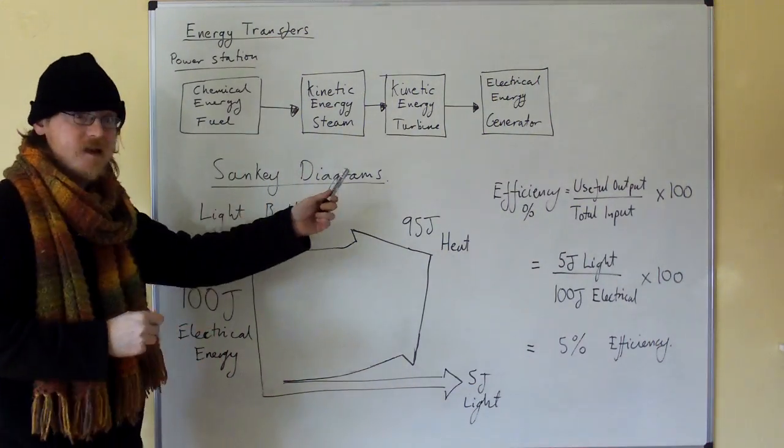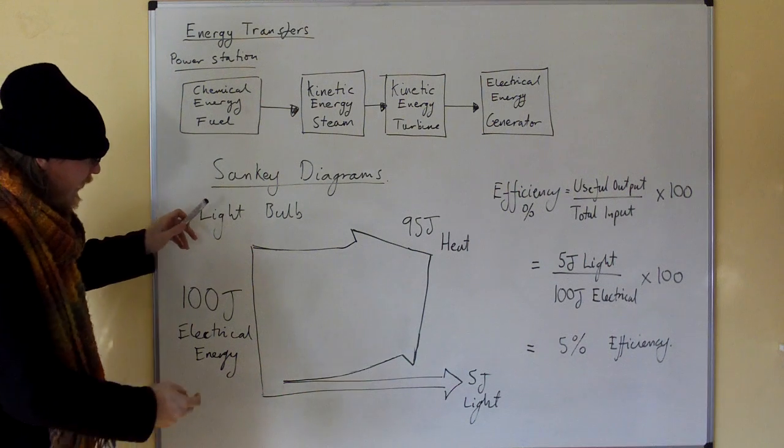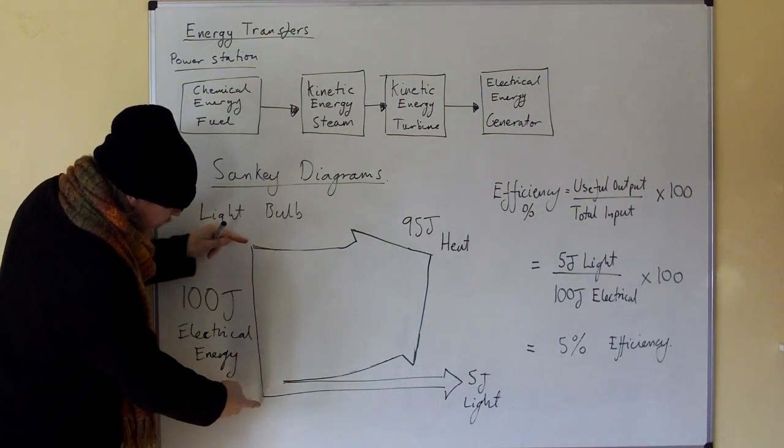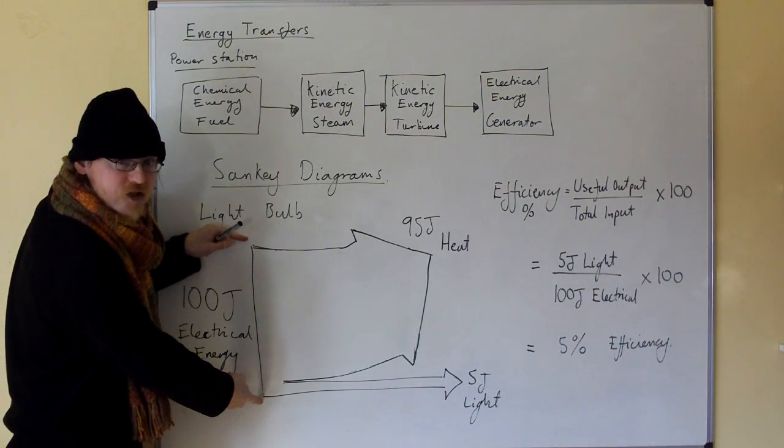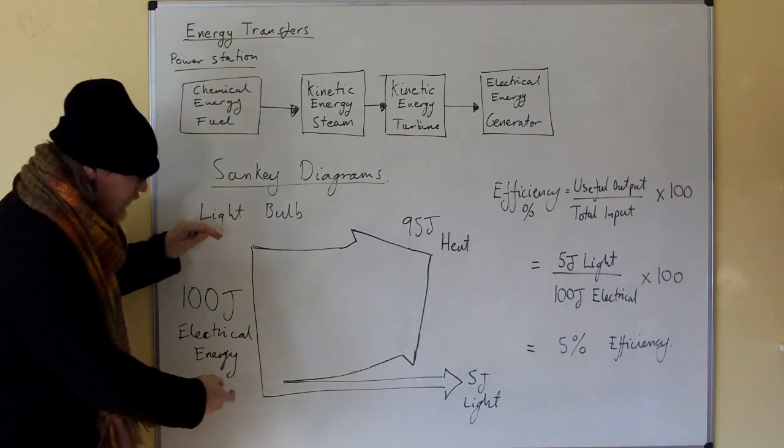Sankey diagrams. We're going to talk about a light bulb. In a Sankey diagram, this line here represents the total energy that you put in. So we're putting in 100 joules of electrical energy into our light bulb.